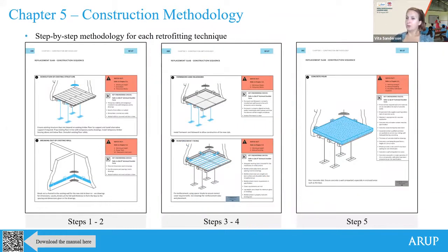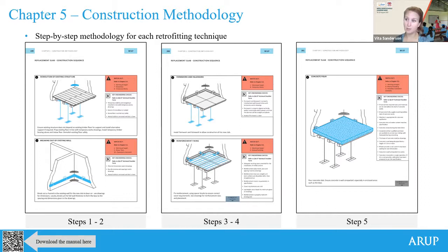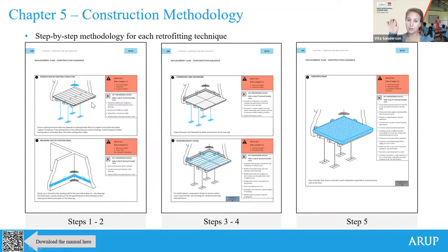We have a step-by-step sequence for each of the techniques. This example is for replacing a slab - it shows the temporary works, demolition of the existing structure, how to set up formwork, how to lay the rebar. At each stage you have your health and safety checks and a couple of quality assurance points. The idea is you do this step, do those checks, and before moving on to the next one you have confidence that things are progressing to a high quality.